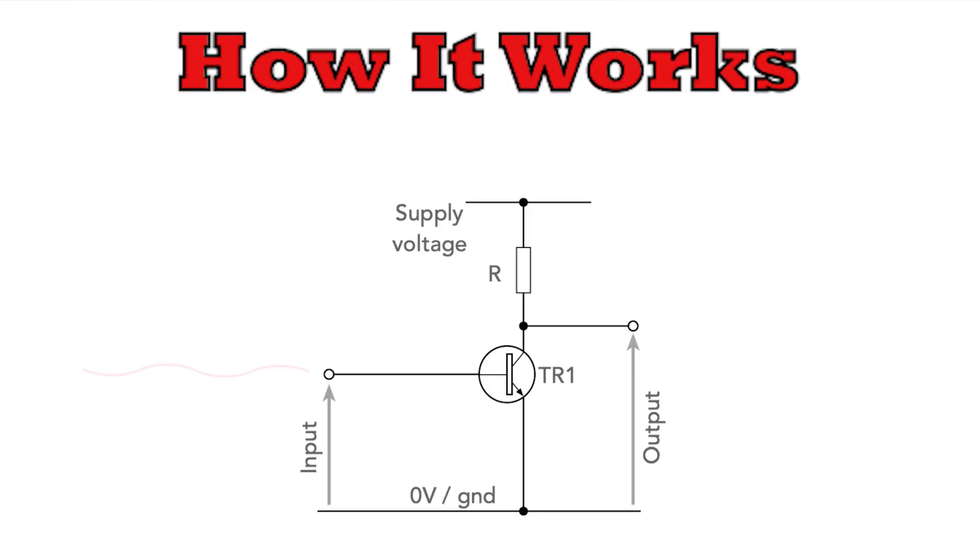So how does it work? When a small input signal is applied to the base of the transistor, it causes a much larger current to flow through the collector to the emitter. This results in a significant amplification of the input signal.